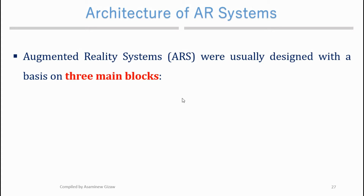We have three types of reality: augmented reality, virtual reality, and mixed reality. This topic covers the architecture of AR — simply the structure of AR.